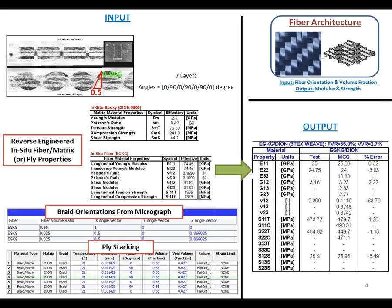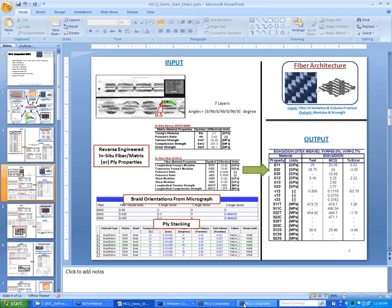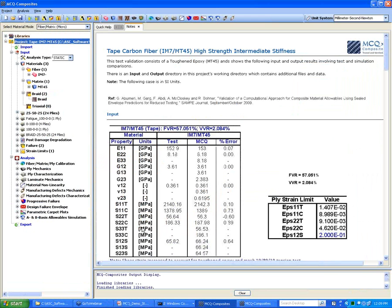We define a braid card — or for example, if you have stitching, I'm going to use that example. On the lower side, the in-plane stacking sequence for which stitching has been done is shown. As an output you will get ply properties. I already prepared an example beforehand, with fiber named IM7 and matrix named MT45.